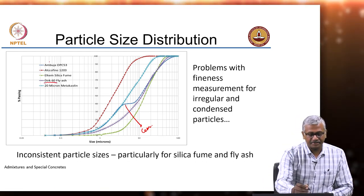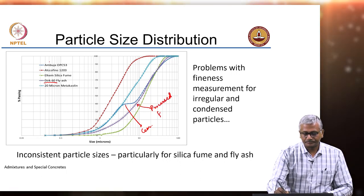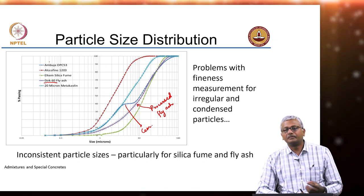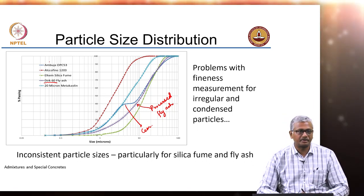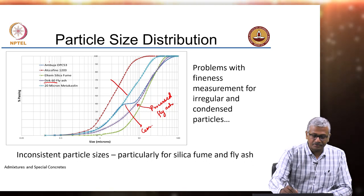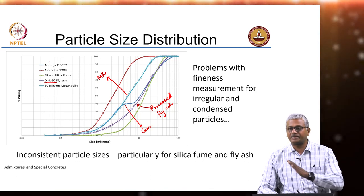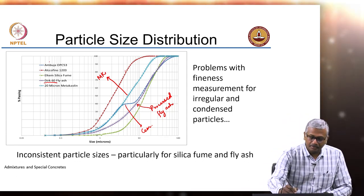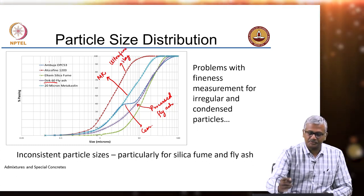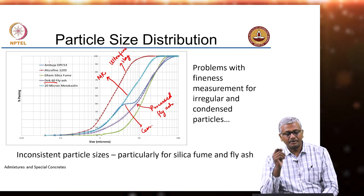Compared to OPC, this is a processed fly ash — Dirk-60 fly ash is a processed fly ash, which is made as a specific product and sold in the market; it is not fly ash directly collected from the thermal plant, but it is processed. Then we have the blue line which is metakaolin, calcine clay. As you can see, it is much finer than cement. And here is ultra-fine slag — slag that has been ground to much finer sizes, which is even finer than the metakaolin.